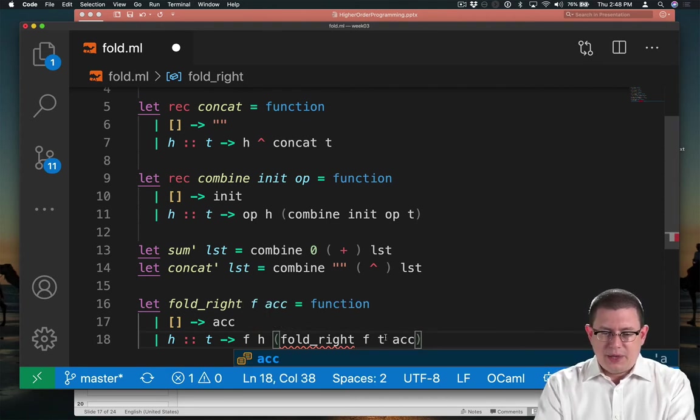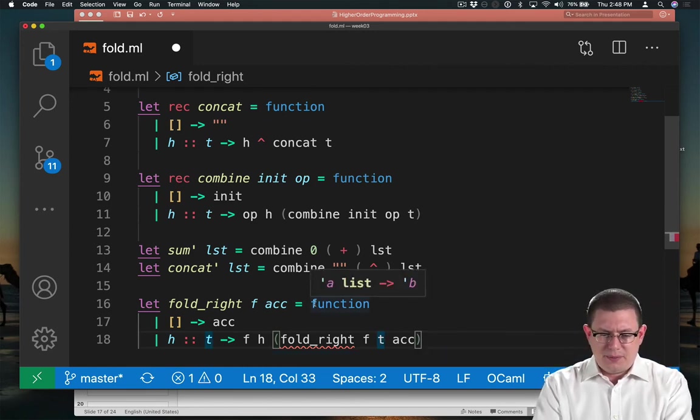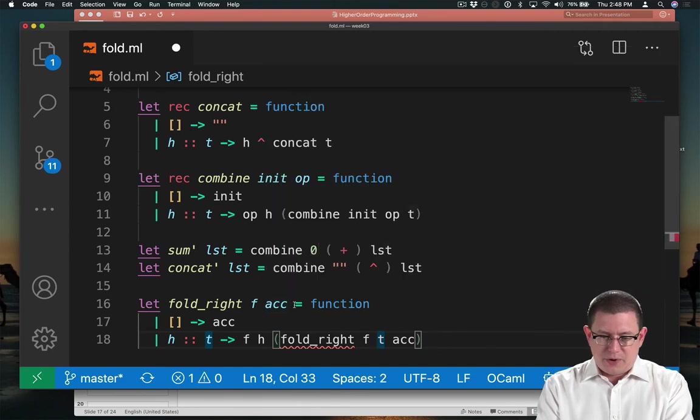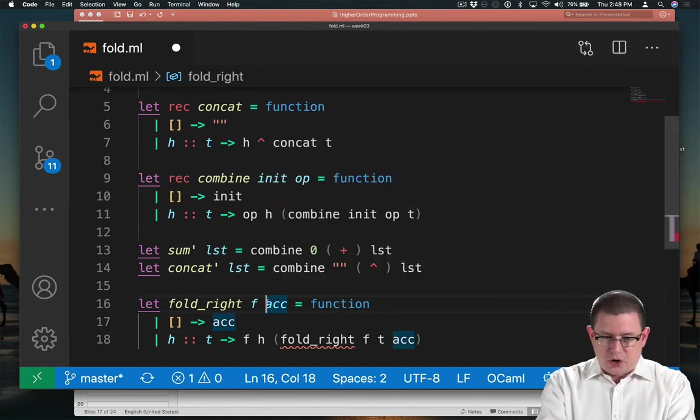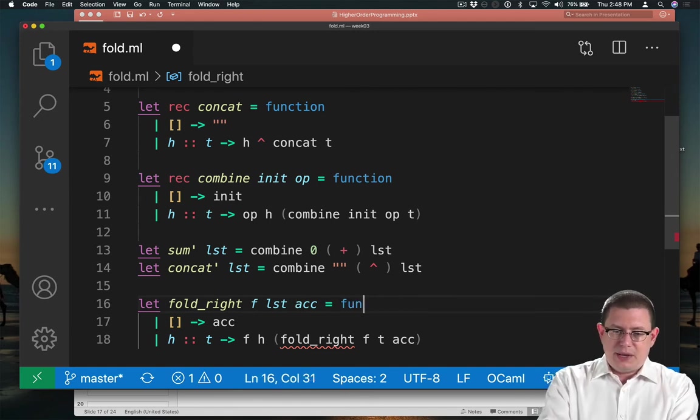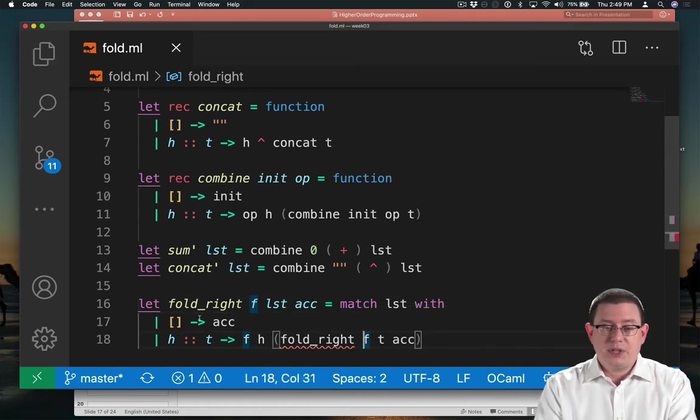Now we do need to have some consistency about where we've passed in the list here. Here I made it the second argument. Up here it's implicitly the third argument. Honestly, you could code it either way as long as you were consistent. It turns out the standard library puts the list argument for fold right here. So I can't actually immediately pattern match using the function keyword. I need to do it this way. And of course, I need the rec keyword.